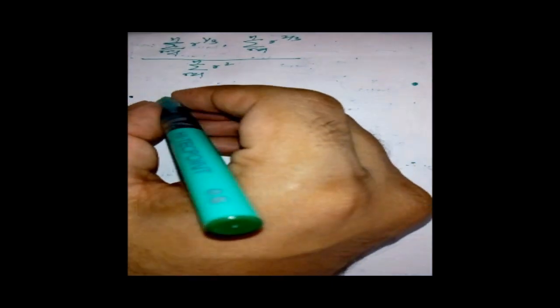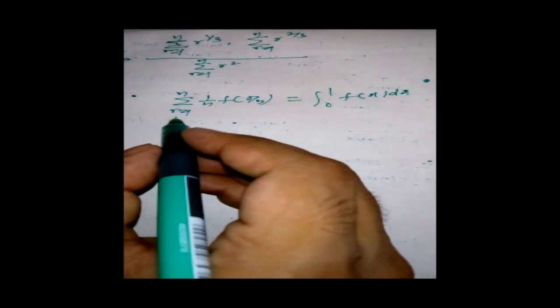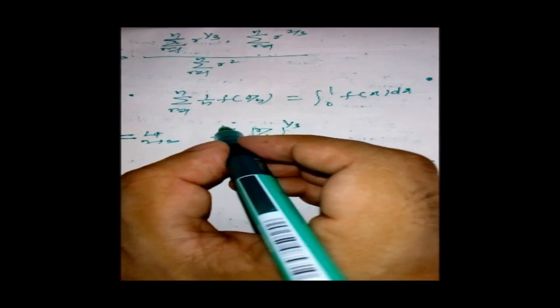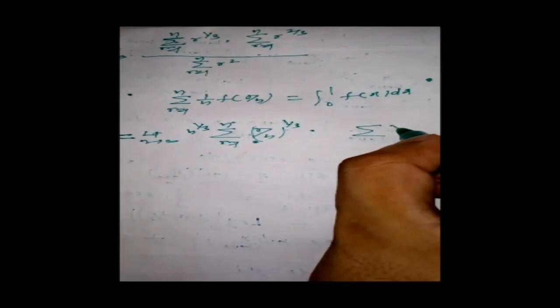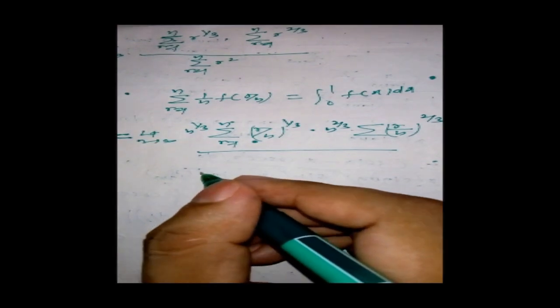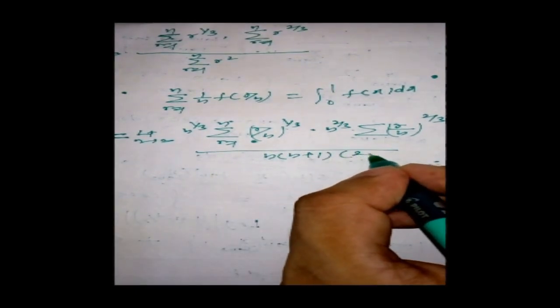We know the fundamental definition: summation (1/n) f(r/n) as n→∞ equals integral from 0 to 1 of f(x) dx. Applying this here: we can take n out from the numerator terms. The summation of r² is the sum of squares of natural numbers, which equals n(n+1)(2n+1)/6.